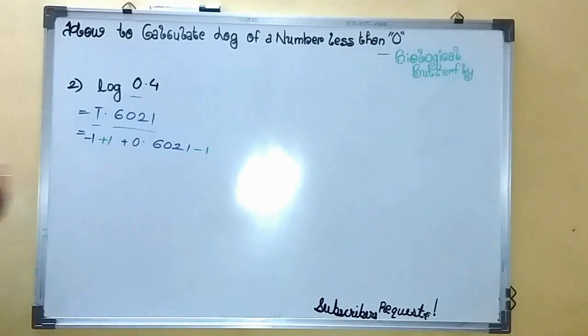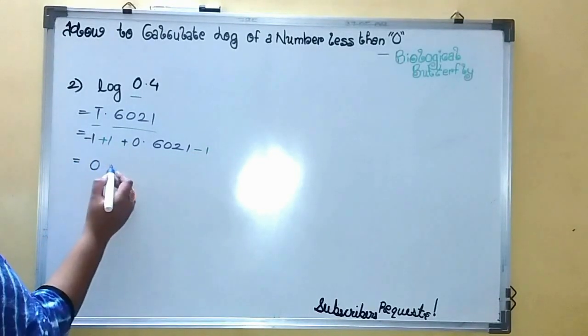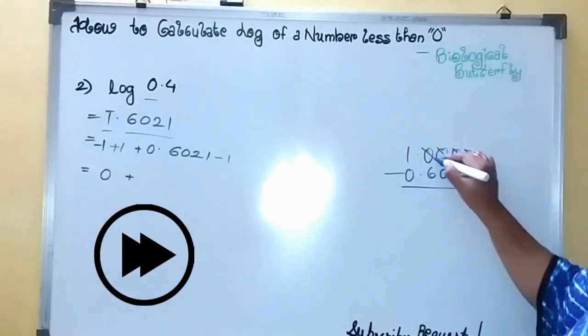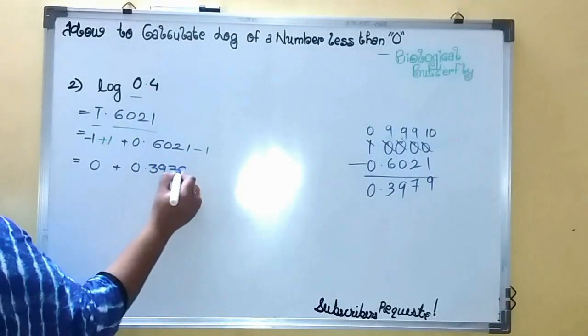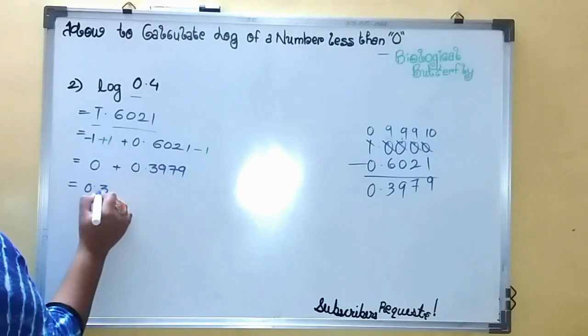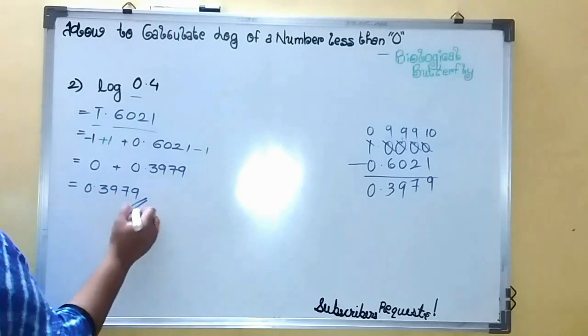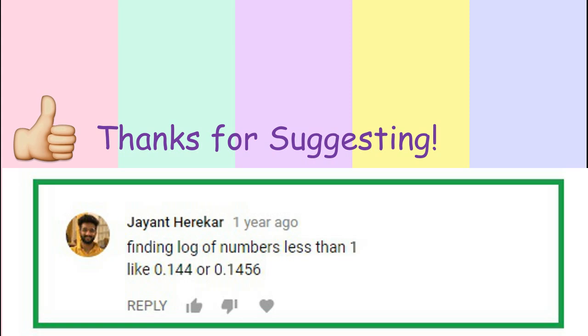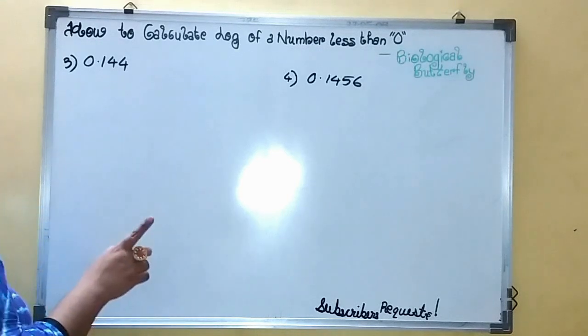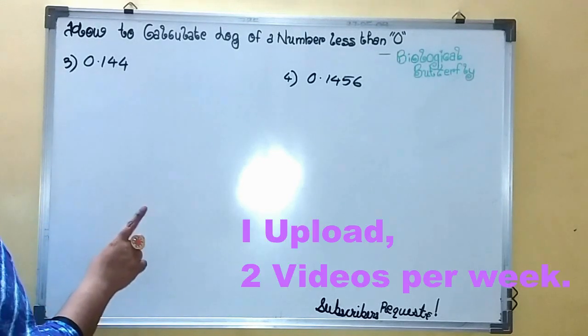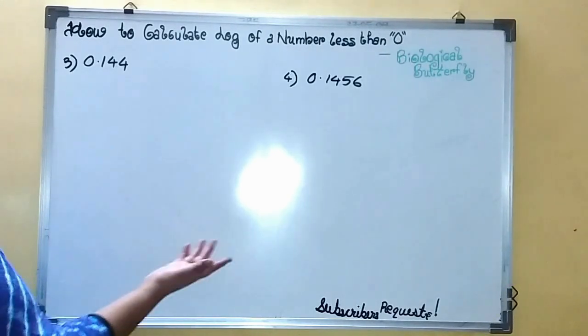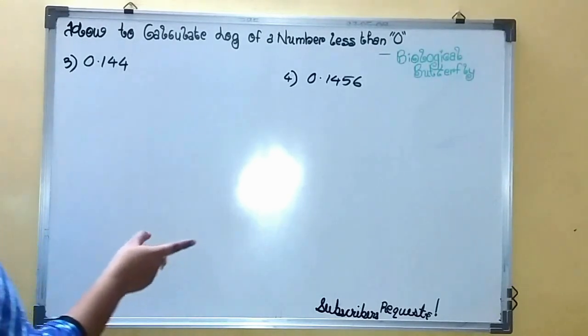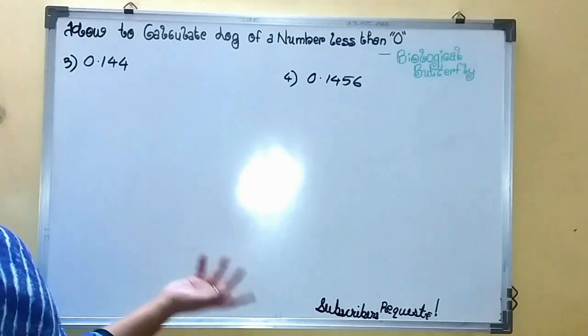Minus one plus one—one becomes zero. Add them both. This is your answer. This example has been suggested by a subscriber, so congratulations. I am trying to solve problems suggested by you. Thank you for suggesting such sweet examples.